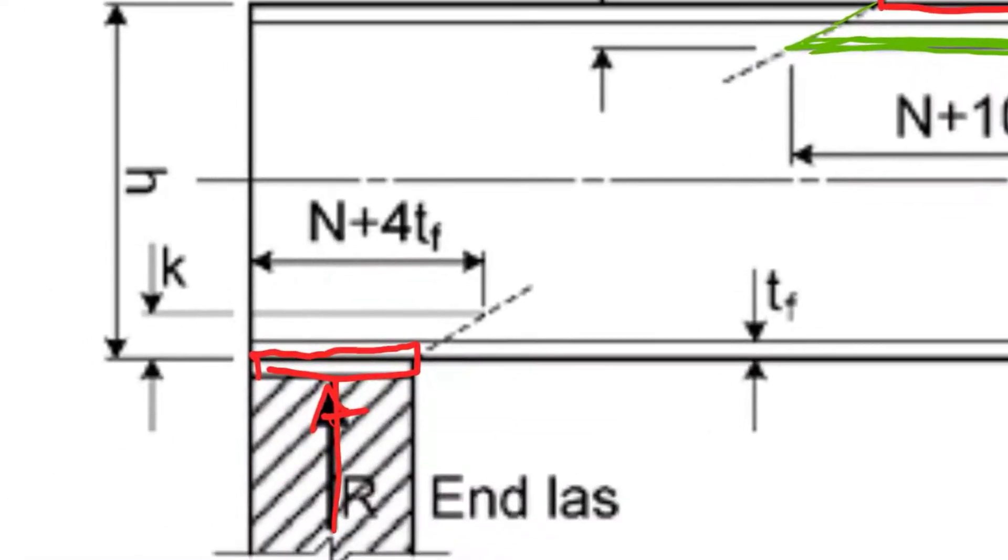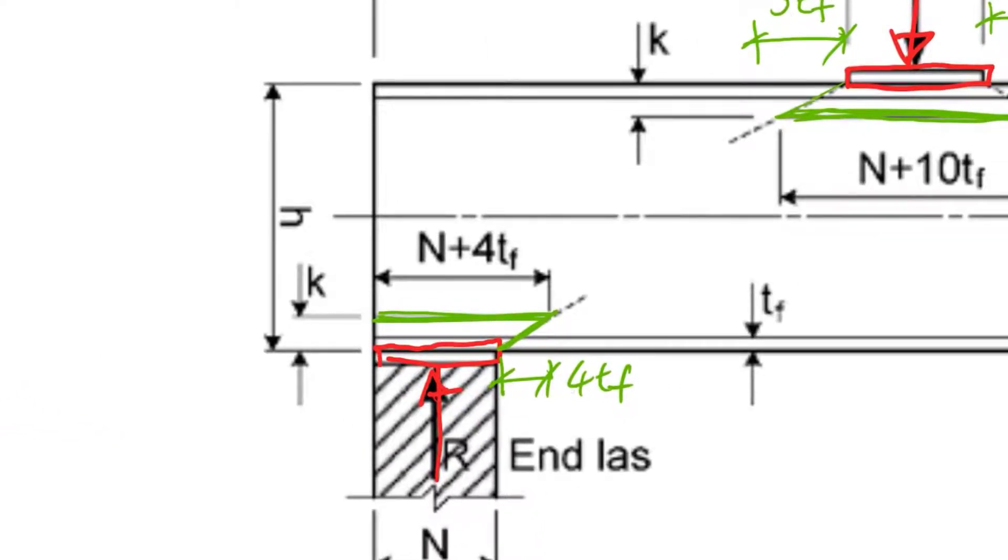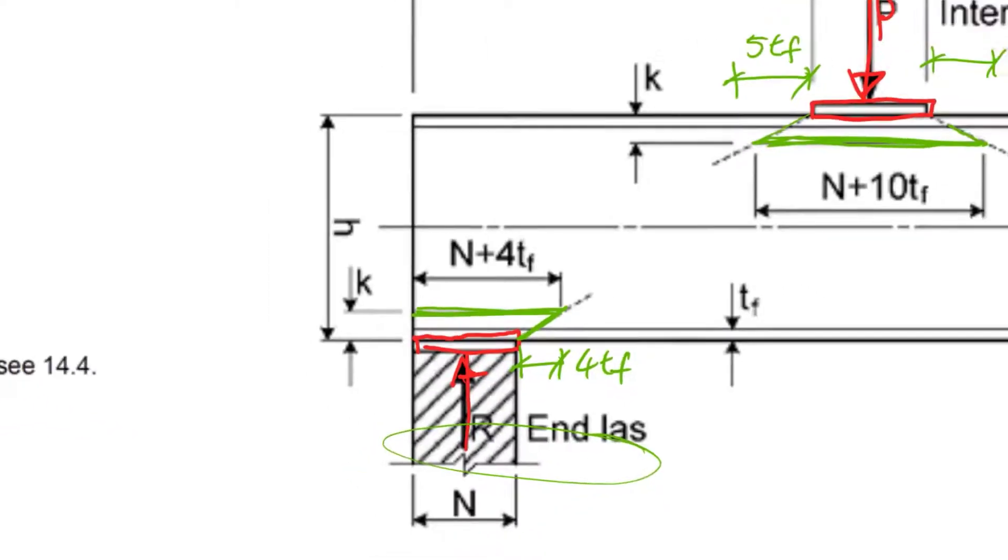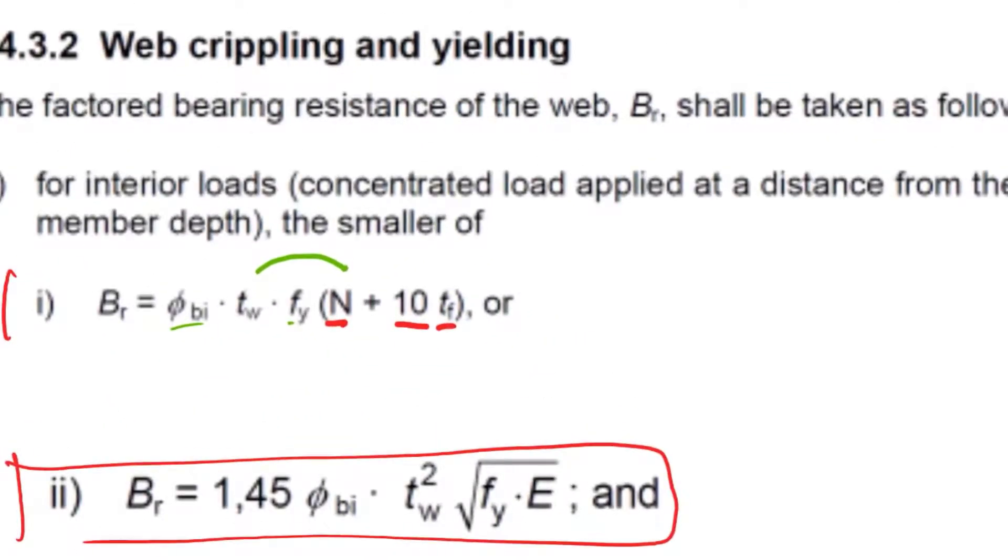This is just taking a physical area - the load distributes through the flanges and through the web. You're checking the stresses along this line where it spreads out 5tf each side. With an end load, it spreads out only in one direction, 4 times the thickness of the flange. An end load is when it's within this end zone, less than h away from the end.